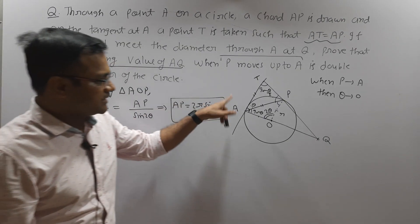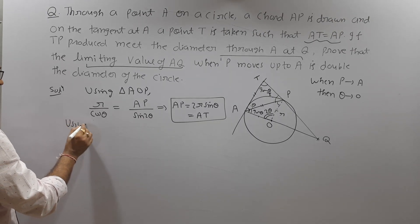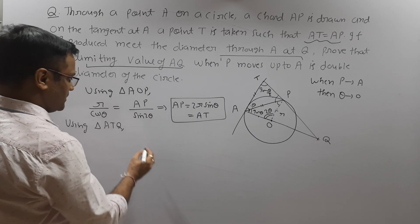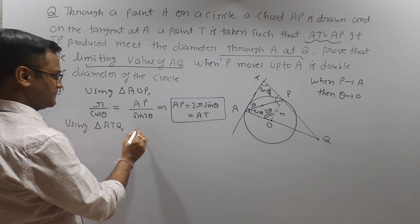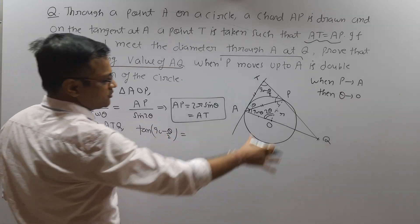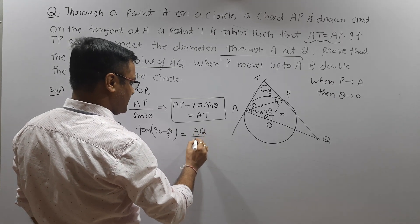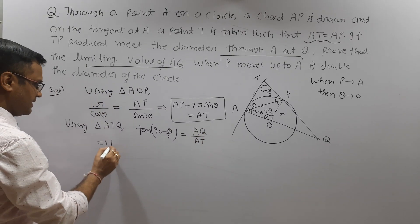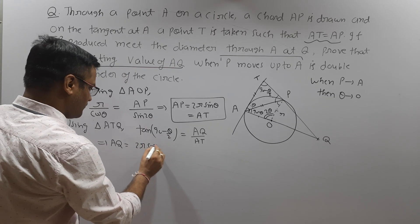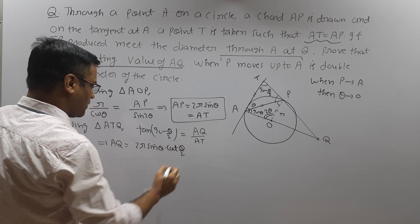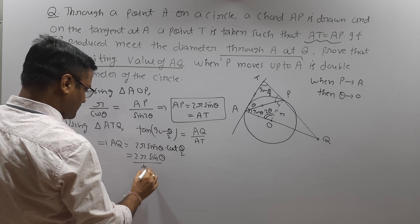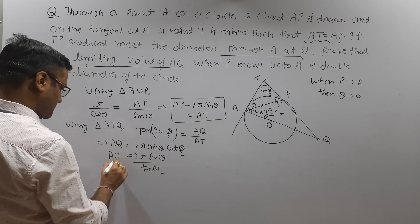Now look at right-angle triangle ATQ. Using triangle ATQ, tan(90 − θ/2) equals perpendicular upon base, which equals AQ upon AT. Therefore AQ = AT × cot(θ/2). Since AT = 2R sin θ, we get AQ = 2R sin θ × cot(θ/2), which can be further written as AQ = 2R sin θ / tan(θ/2). This is the length of AQ expressed as a function of θ.